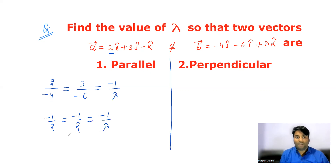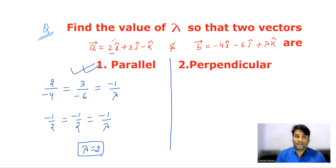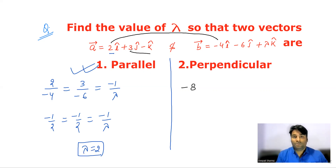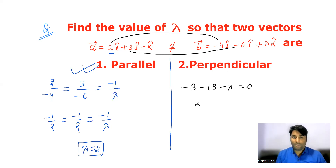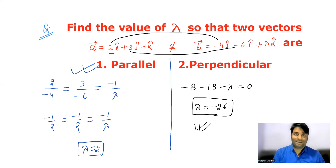For the second case, finding lambda when the vectors are perpendicular: (2)(-4) + (3)(-6) + (-1)(lambda) = 0, so -8 - 18 - lambda = 0, giving lambda = -26. Hope you got this concept, thank you.